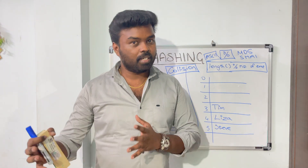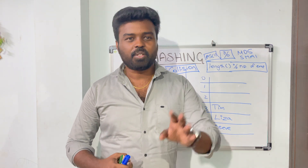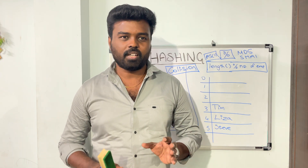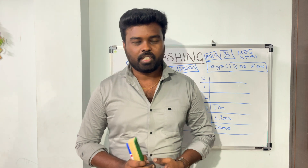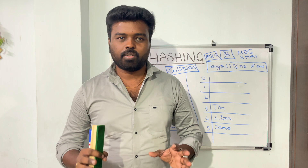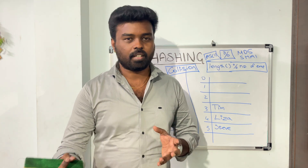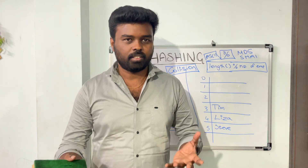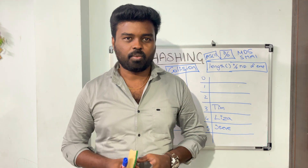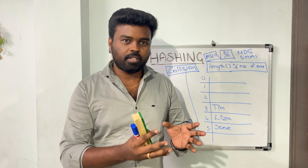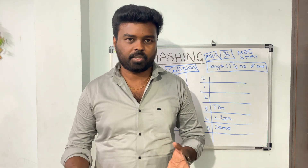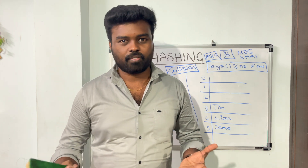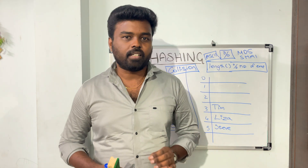Apart from improving the efficiency of a search algorithm, hashing can also be used to identify the uniqueness of a particular object — it helps to uniquely identify an object. For example, if you have two files and you want to check whether these two files are the same, and each file might contain more than a thousand lines, it's not practical to go through all those lines and compare them. So here you can use hashing: you create a hash code from one file, create a hash code from the other file, and then compare the hash codes. If both hash codes are the same, then the file content is probably also the same. If not, the file content is different — that's a very powerful way to compare objects.